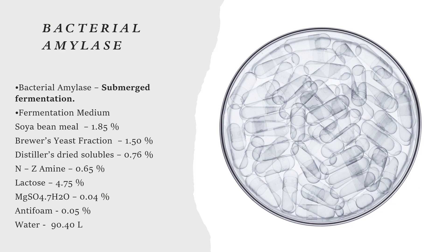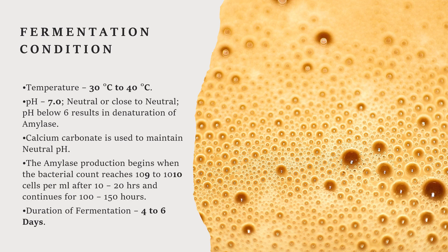A volume of 90.4 litres is used and the temperature should be maintained at 30 to 40 degrees Celsius. pH is 7, neutral or close to neutral. pH below 6 results in denaturation of amylase. Calcium carbonate is used to maintain the neutral pH. Amylase production begins when the bacterial count reaches 10⁹ to 10¹⁰ cells per ml, after 10 to 20 hours, and continues for 100 to 150 hours. The duration of fermentation is 4 to 16 days.